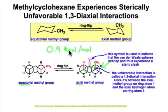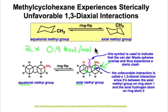Since we have two of them, we can estimate that the energy difference between the equatorial conformation — which has no Gauche interactions involving this methyl group — versus the axial, which has two of them, is about 1.8 kilocalories per mole in favor of the equatorial.